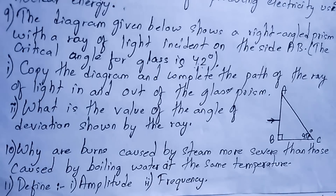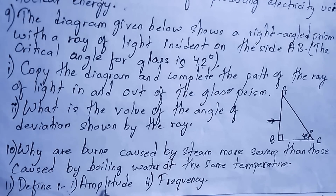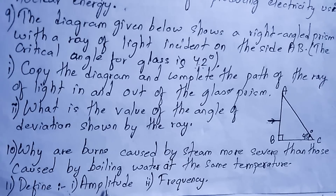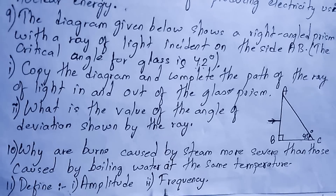Next question: define amplitude and frequency. Amplitude — the maximum displacement of medium particles on either side from its mean position is called amplitude. Frequency — the number of waves which pass through a point in one second is called frequency.